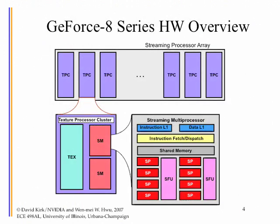From a top-level view, the whole G80 chip is called the Streaming Processor Array (SPA). It's organized into eight Texture Processor Clusters (TPCs). Each cluster actually contains two Streaming Multiprocessors (SMs) and one texture processing unit that both SMs share.